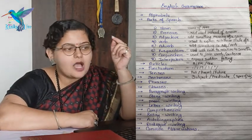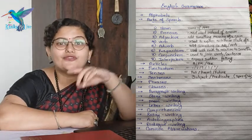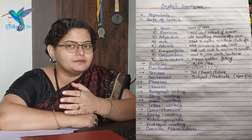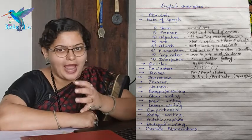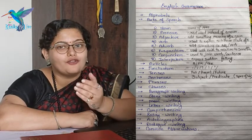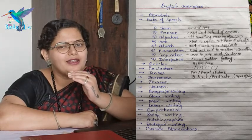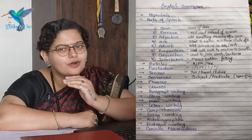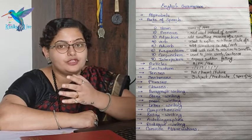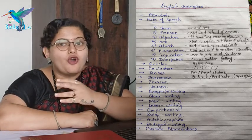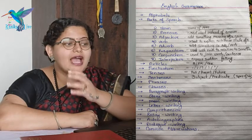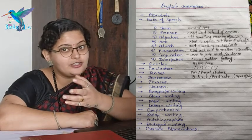You can see the next topic is pronoun, which is used instead of a noun — the word used instead of a noun is called a pronoun. The next is adjective, which adds meaning to a noun — some additional relevant, meaningful word is added to a noun, that is an adjective. Then we have verb, which is used to express the action or the state of a noun. The next is adverb, which adds something to the adjective and verb.